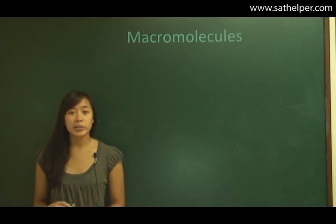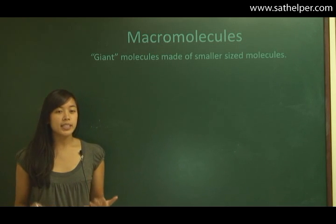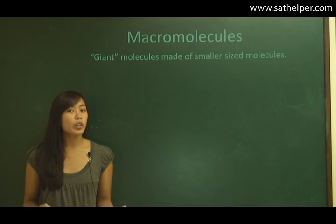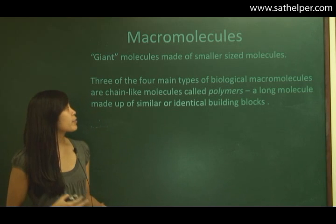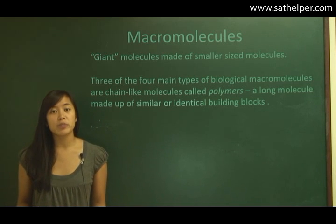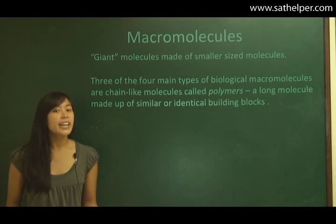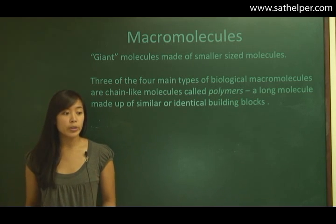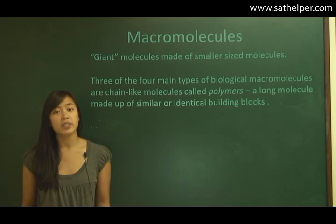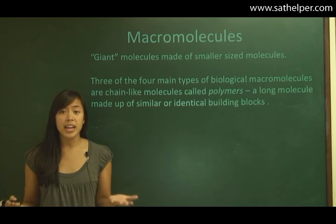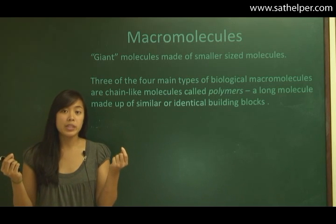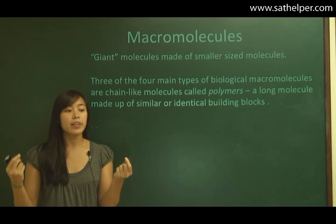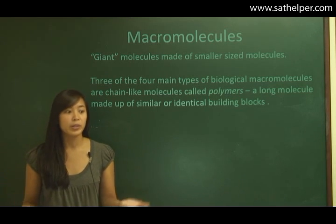Macromolecules are basically giant molecules — talking about molecular size here — made up of smaller sized molecules. Three of the four main types of biological macromolecules are chain-like molecules called polymers. A polymer is a long molecule made up of similar or identical building blocks. For example, think of a necklace: the necklace would be the polymer and its building blocks would be each of the individual beads. String them all together and you have a polymer, or a macromolecule.